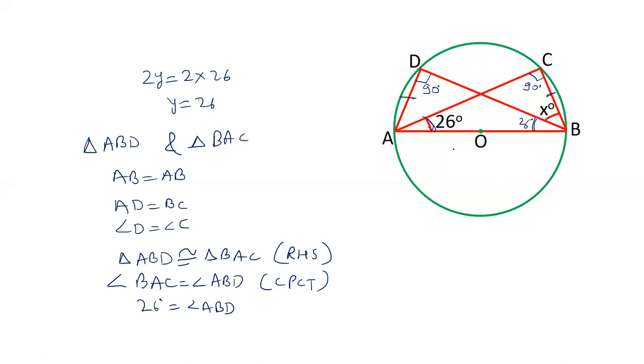And finally, we have to calculate the value of x. So let us take triangle ABC. In triangle ABC, angle BAC plus angle C plus angle ABC equals 180 degrees. Angle BAC is 26 degrees, angle C is 90 degrees, and angle ABC is x plus 26. So the value of x is 180 minus 90 minus 26 minus 26, which is 90 minus 52, and 90 minus 52 is 38 degrees. The value of x is 38 degrees.